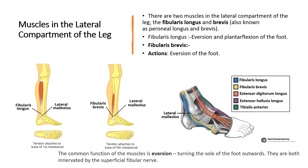Now coming to the muscles in the lateral compartment of the leg — we have only two muscles in this group: fibularis longus and fibularis brevis. They bring about eversion. As I discussed, muscles that attach toward the lateral side of the foot bring about eversion and plantar flexion. Plantar flexion means bringing the foot down. So fibularis brevis' action is eversion of the foot.